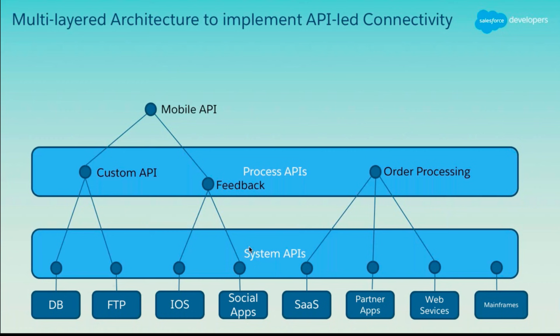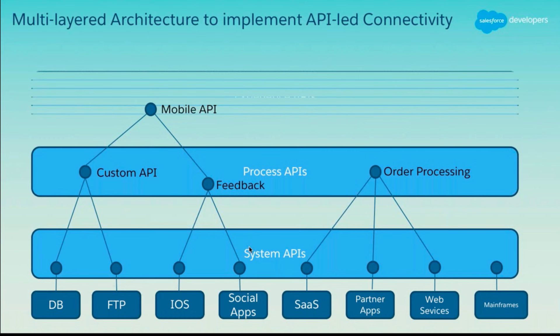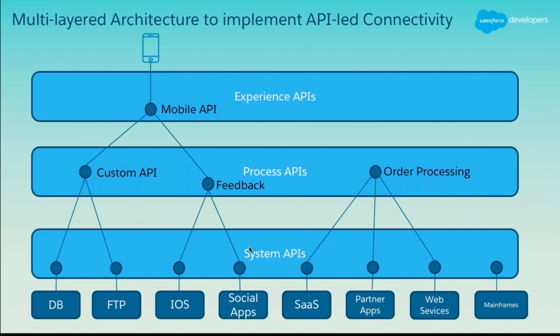So the architecture organizes APIs into layers: you create more composite APIs by using fundamental APIs. These APIs form the nodes in your application network — the same nodes we saw in the earlier diagram.